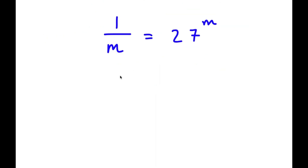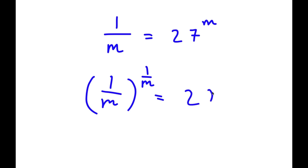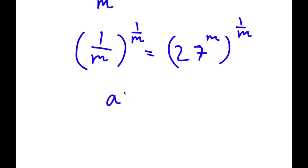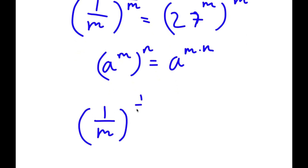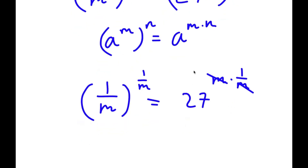In this problem, I have 1 over m is equal to 27 to the power of m. To solve this, I'm going to first take the power of 1 over m on both sides. So now I have 1 over m to the power of 1 over m is equal to 27 to the power of m to the power of 1 over m. Using the rule a to the power of m to the power of n equals a to the power of m times n, 27 to the power of m times 1 over m — the m's cancel out — leaving just 27.